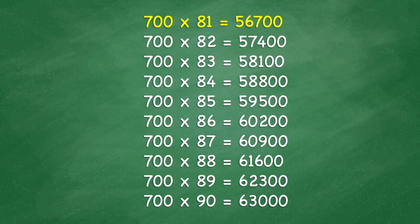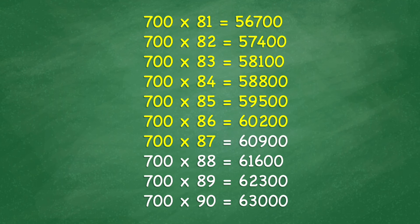700 times 82 equals 57,400. 700 times 83 equals 58,100. 700 times 85 equals 59,500. 700 times 86 equals 60,200. 700 times 87 equals 60,900. 700 times 88 equals 61,600. 700 times 89 equals 62,300.